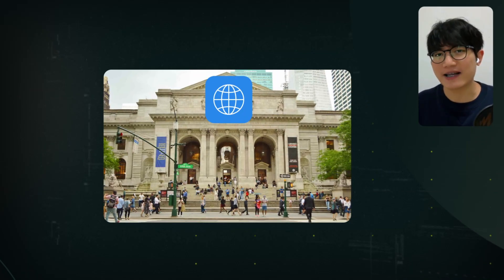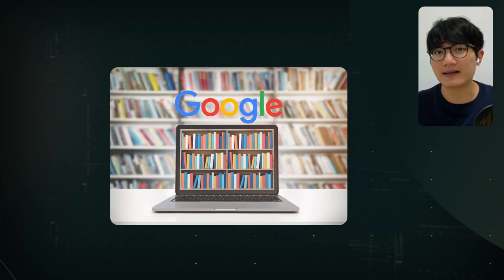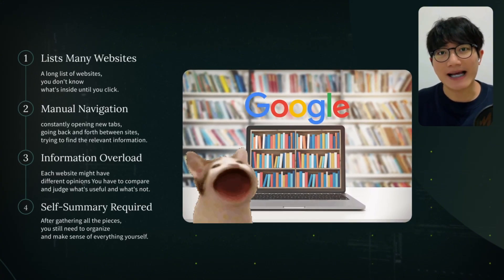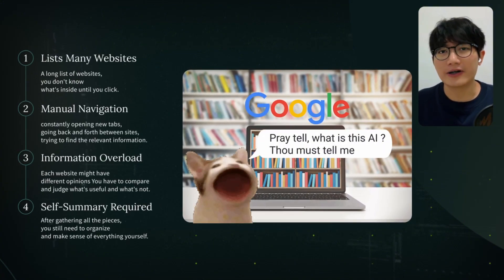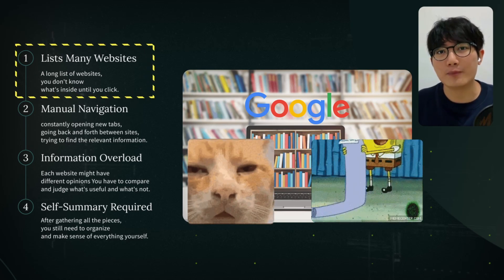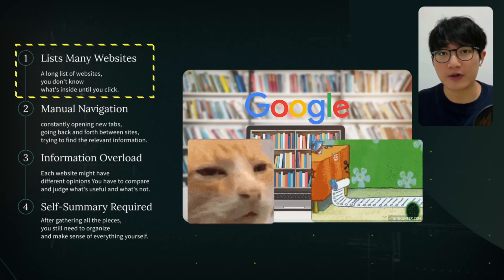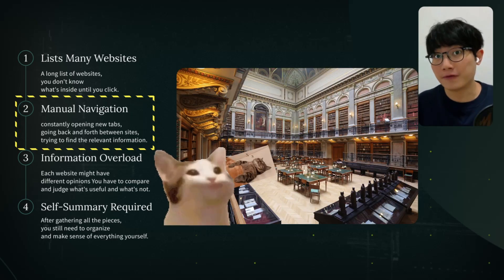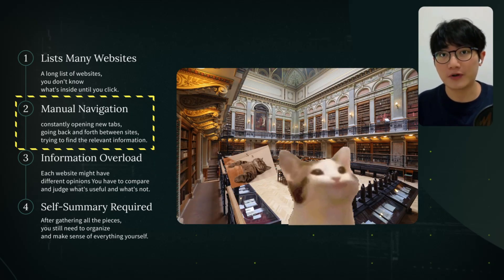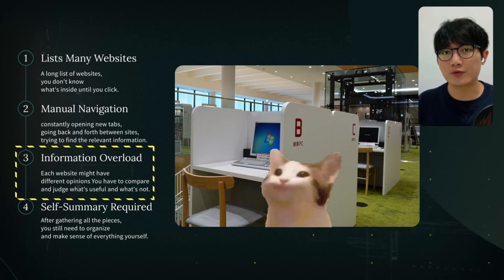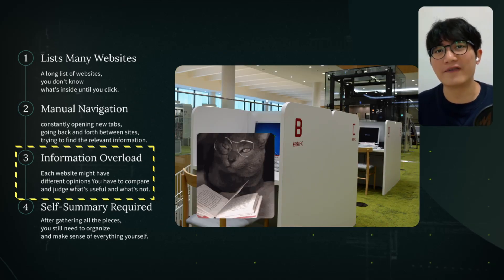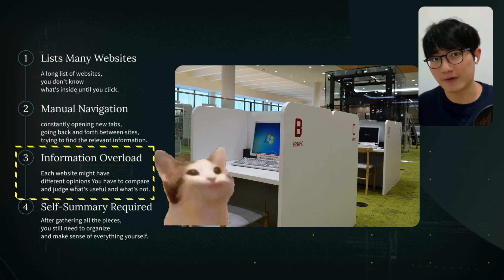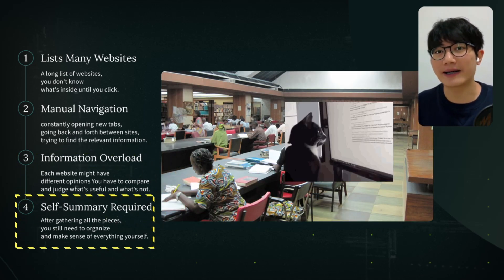Imagine the internet is like a huge library. Google is like the library's index system. When you ask 'I want to learn about AI,' the system lists out many shelf numbers and book titles. You need to go to each shelf yourself, open each book to check its content, judge which books are more valuable yourself, and finally summarize and organize the knowledge in your head yourself.